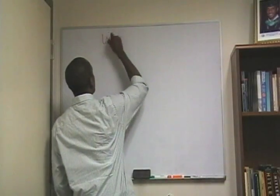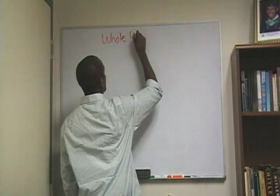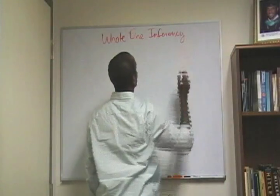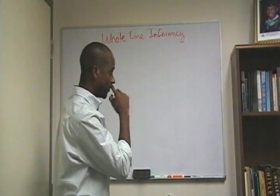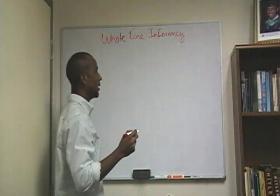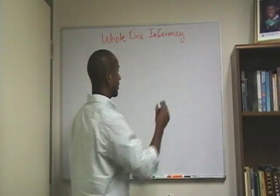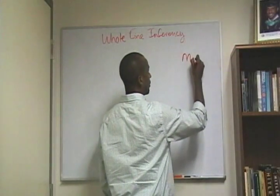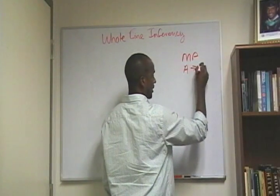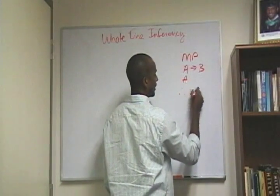So, there's whole line inferencing. Imagine the following. Remember we said, I told you what modus ponens was, right? And we'll abbreviate modus ponens as MP. And we said it's the claim that if you have A, then B; I have A, therefore I can get B.